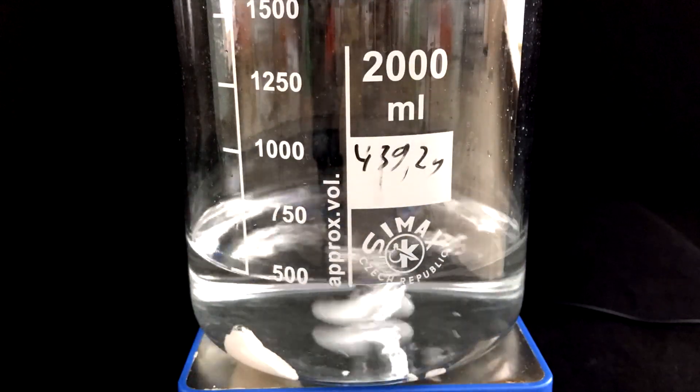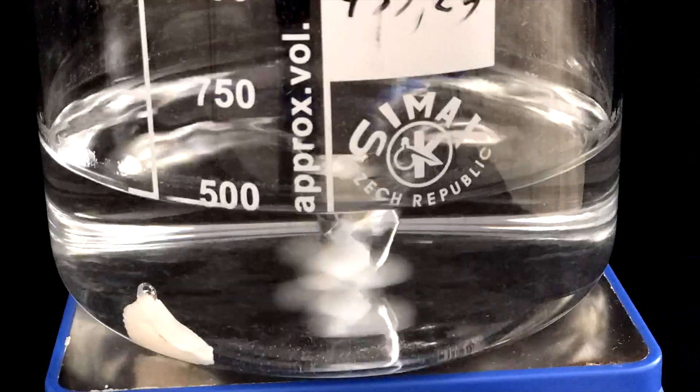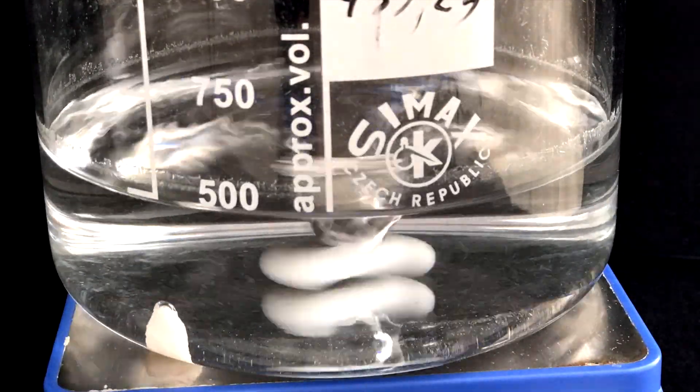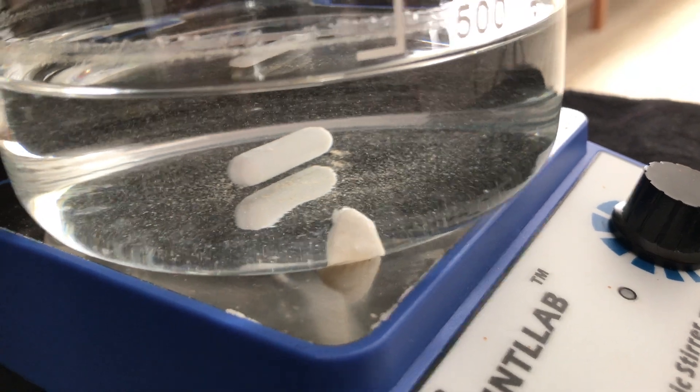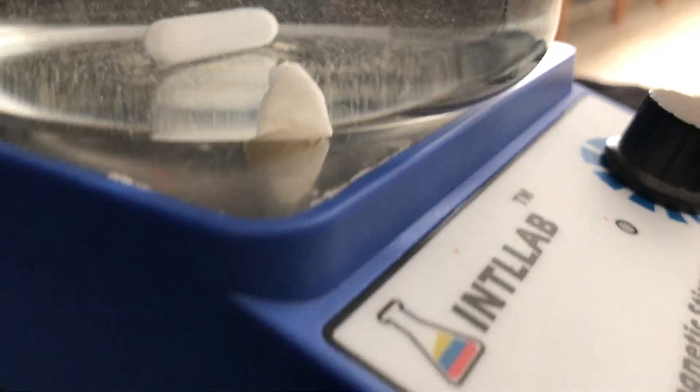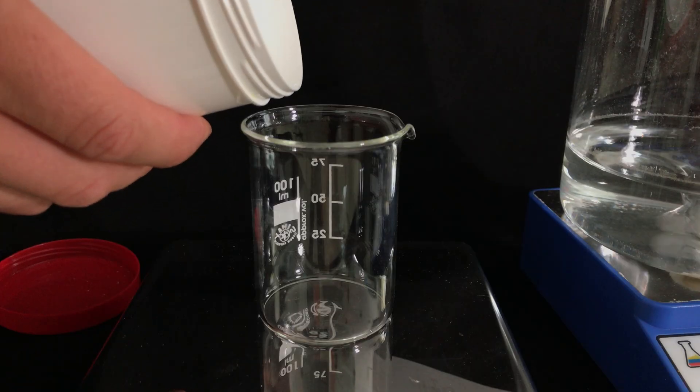If we used the hot plate, we could have dissolved it much faster, but I decided to stick to the magnetic stirrer because I had time. Once fully dissolved, we went to the next step. We have to prepare a solution of ammonium thiocyanate.